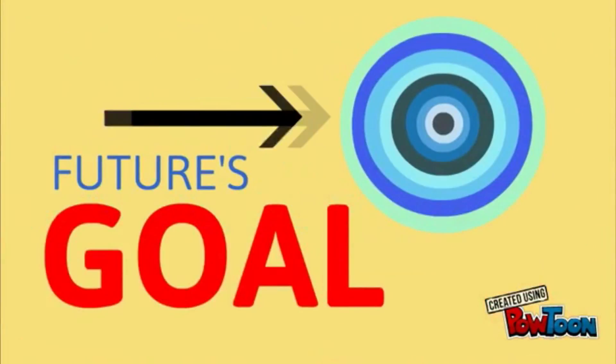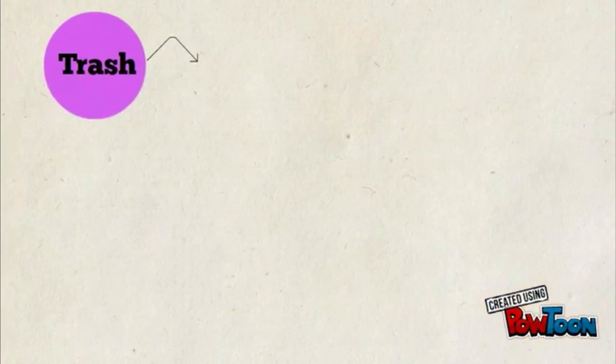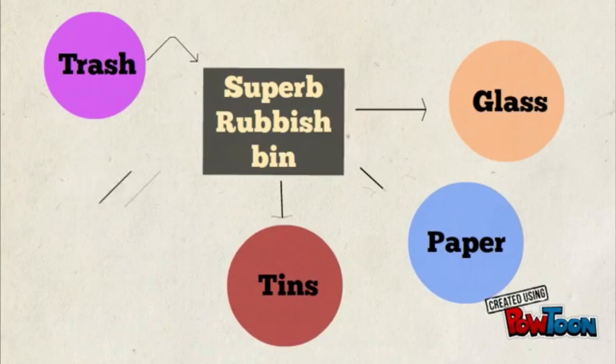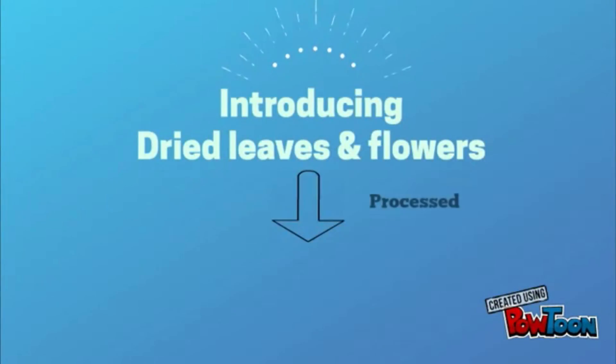Future goals include trash being automatically separated into glass, paper, and tins using super rubbish bins. Dried leaves and flowers can be processed into recycled papers and tissue papers.